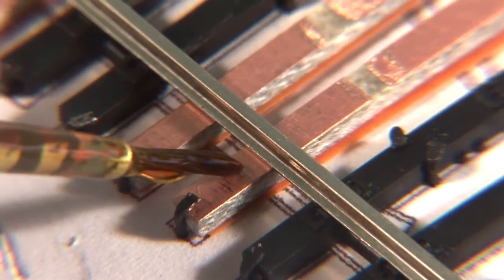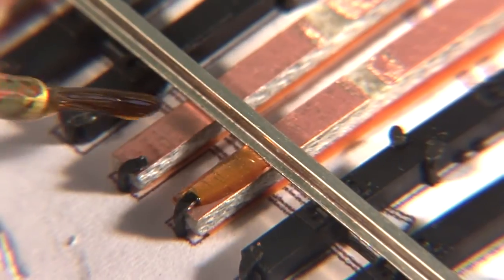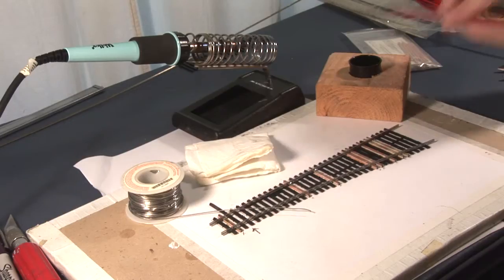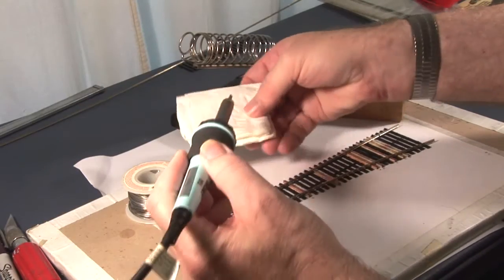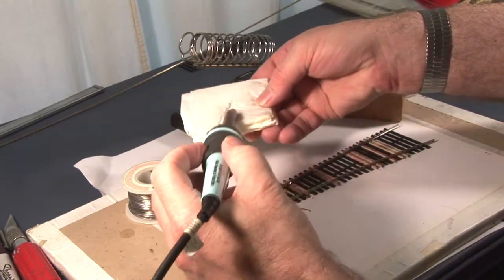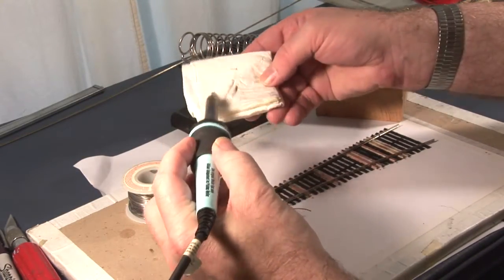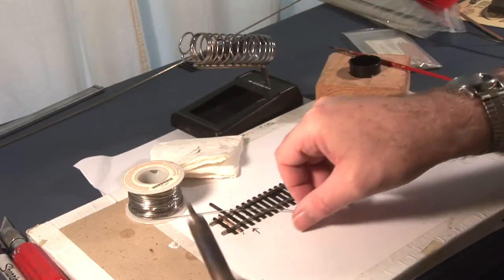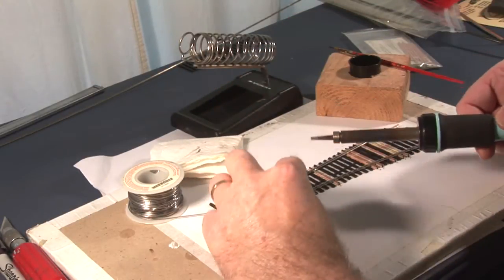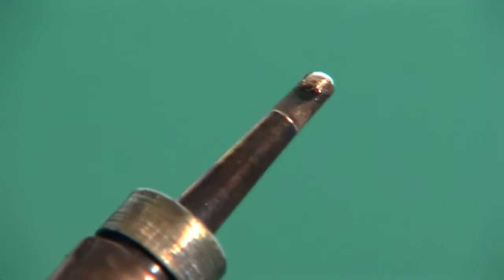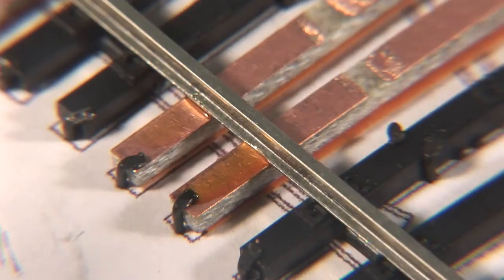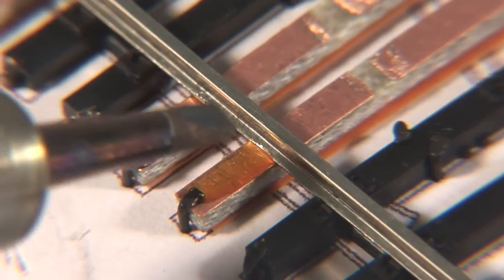I apply rosin flux to the PC tie with a small paint brush. I clean the soldering iron tip on a damp paper towel, load the tip up with a bead of rosin core solder, and touch the tip to the fluxed PC tie and rail side.